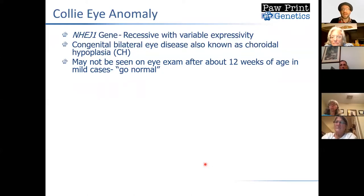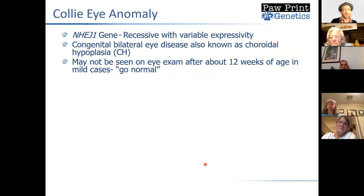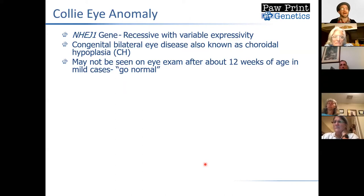The vast majority of cases of collie eye anomaly are mild. Since this is recessive, it requires two copies of the mutation — one from each parent. It has variable expressivity, meaning not every dog shows the same level of severity. In very mild cases, which are the majority, after about 12 weeks of age it may not be possible to see that these dogs have collie eye anomaly. In those mild cases, dogs will not show obvious vision deficits, but it may be seen on an eye exam, especially before 12 weeks.